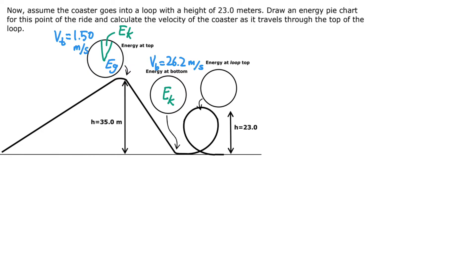The gravitational potential energy present at the top of the loop is going to be less than it was at the top of the hill, but it still will be a sizable part of the pie chart. Let's break it down something like this, knowing that it's not going to be perfect. Maybe we represent the kinetic energy wedge like this.